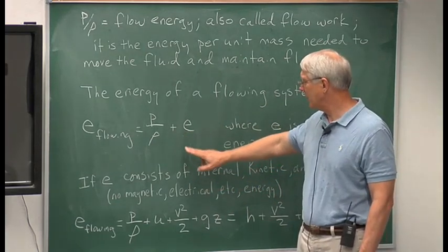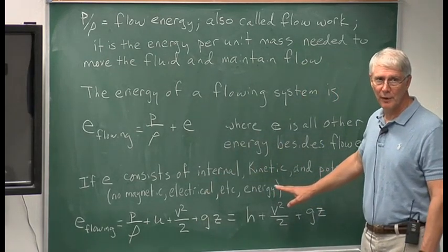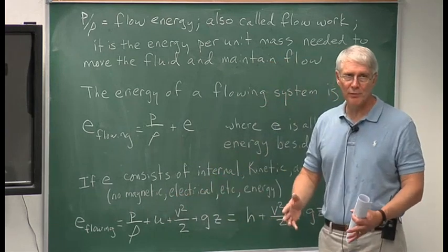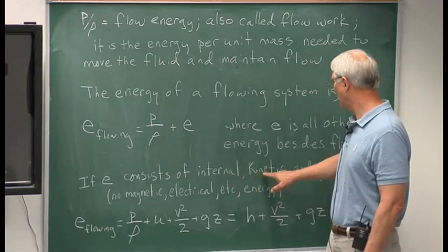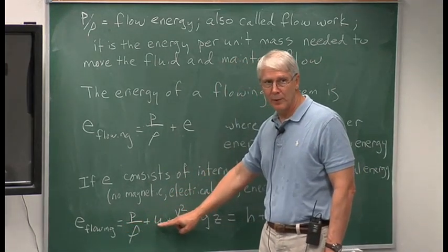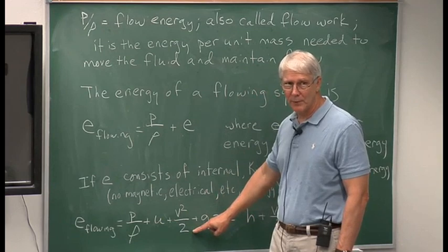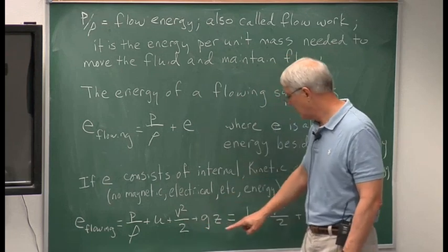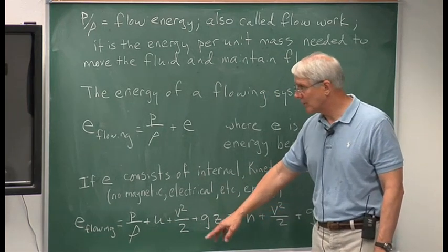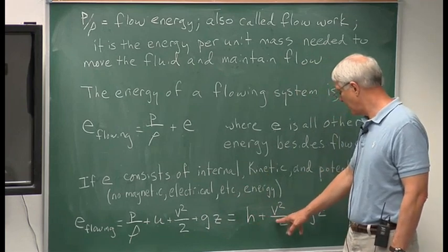Now if this term E consists of internal, kinetic, and potential energy — and most of the flows that we deal with consist of that — so we're saying no magnetic, no electrical, no nuclear energy or anything like that. We're restricting ourselves to internal, kinetic, and potential energy. Then the flowing energy can be represented as the flow energy plus the internal energy, plus the V squared over two kinetic energy term — which is kinetic energy per unit mass — and then the potential energy. If we combine the flow energy and the internal energy into our enthalpy, we have the flowing energy equals the enthalpy plus kinetic energy plus potential energy.